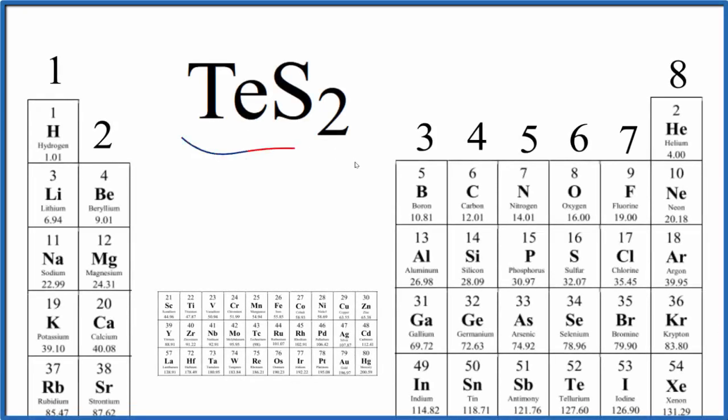To write the Lewis structure for TeS2, let's first count up the valence electrons. Here's Te, it's in group 16, sometimes called 6A, it has six valence electrons.